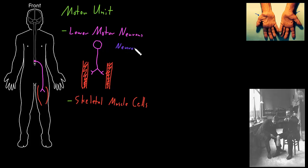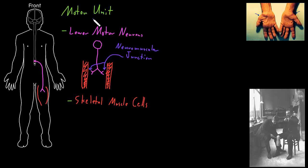That special name is the neuromuscular junction — neuro for the neuron and muscular for the muscle cell. The neuromuscular junction is the synapse between a lower motor neuron and a skeletal muscle cell. Lower motor neurons will usually synapse with multiple skeletal muscle cells, so they'll have multiple neuromuscular junctions. We call it a unit because usually when a lower motor neuron fires an action potential, it causes all of the skeletal muscle cells in its unit to contract.